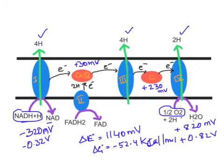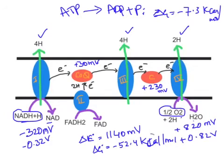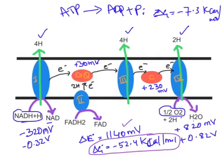To put this in perspective: if you break the terminal phosphate of ATP to yield ADP plus inorganic phosphate, the delta G for that reaction is just minus 7.3 kilocalories per mole. Compare that with the delta G of oxidation of NADH+H+ to NAD+, where the redox potential difference between NADH+H+ and the final acceptor oxygen is 1140 millivolts, amounting to a free energy change of minus 52.4 kilocalories per mole.